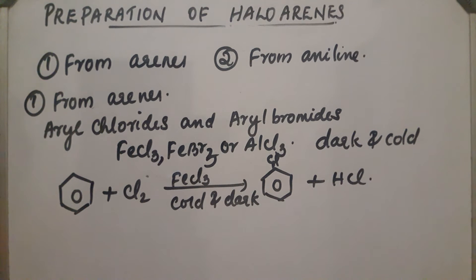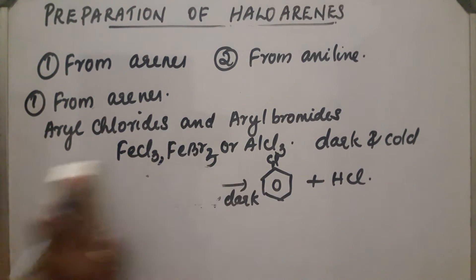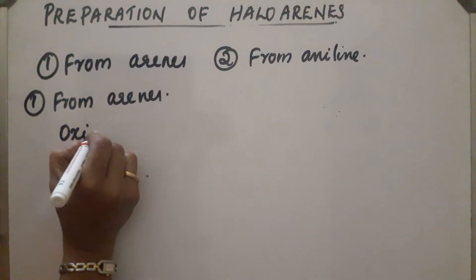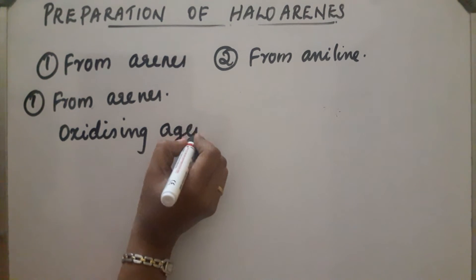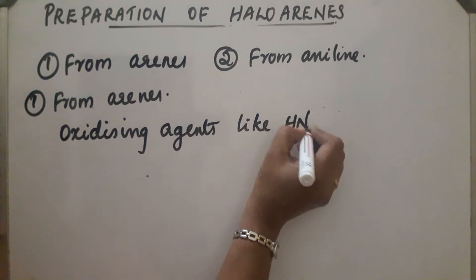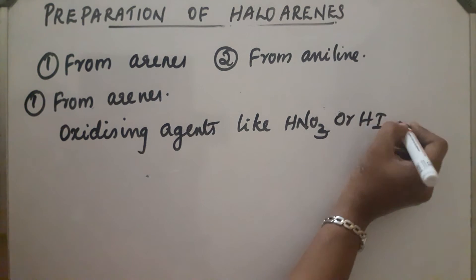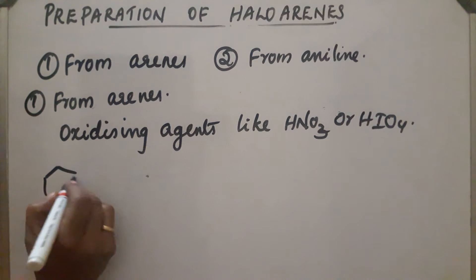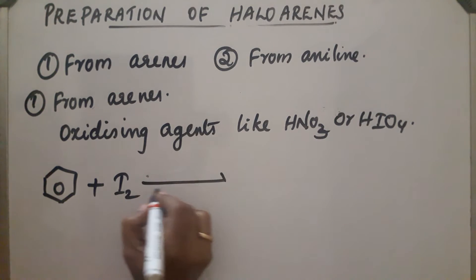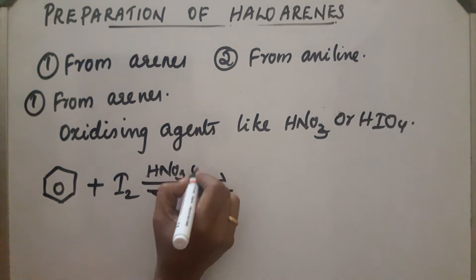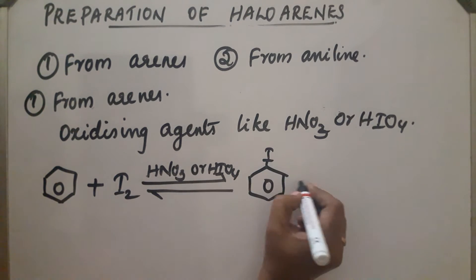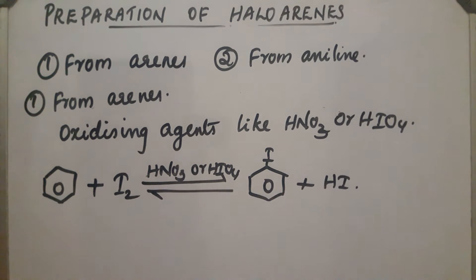Iodobenzene cannot be prepared by this method because the reverse reaction takes place. So the reaction is carried out in the presence of oxidizing agents like HNO3 or HIO4. In the presence of these oxidizing agents, the HI produced will be oxidized or destroyed, so the reverse reaction will not take place. Benzene iodination in the presence of HNO3 or HIO4 gives iodobenzene plus HI, and HI gets oxidized.